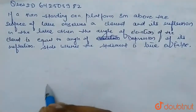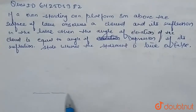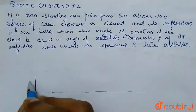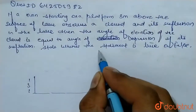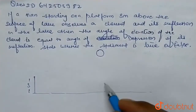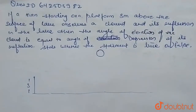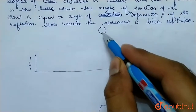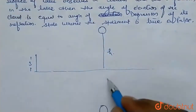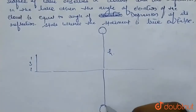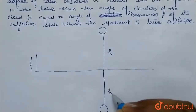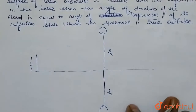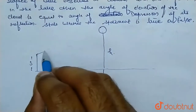First, draw the diagram. Suppose this is the surface of a lake and the man is 3 meters above the surface. The man is here and the cloud is here. The image of the cloud will be formed — the distance between the cloud and the surface of the lake equals the distance of the image from the surface, since image distance equals object distance.